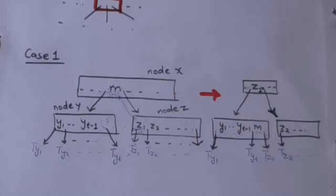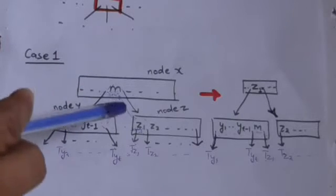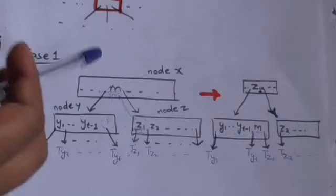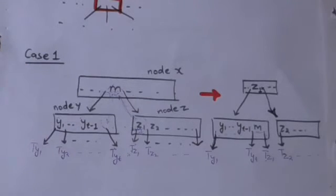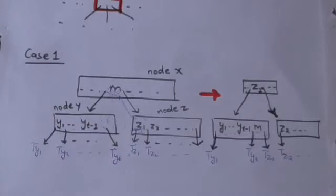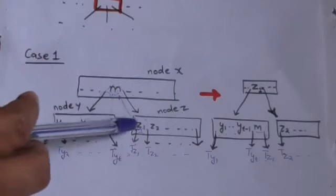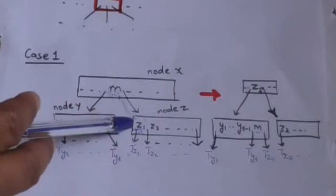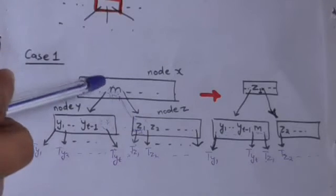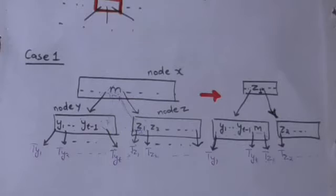There are two cases. The first case is when any immediate sibling of node Y — either right or left — has at least T keys. Suppose the immediate right sibling of node Y is node Z, and node Z has at least T keys. Then the key M of node X, which has node Y at its left and node Z at its right, will be replaced by the leftmost key of node Z. The leftmost key of node Z is Z1.